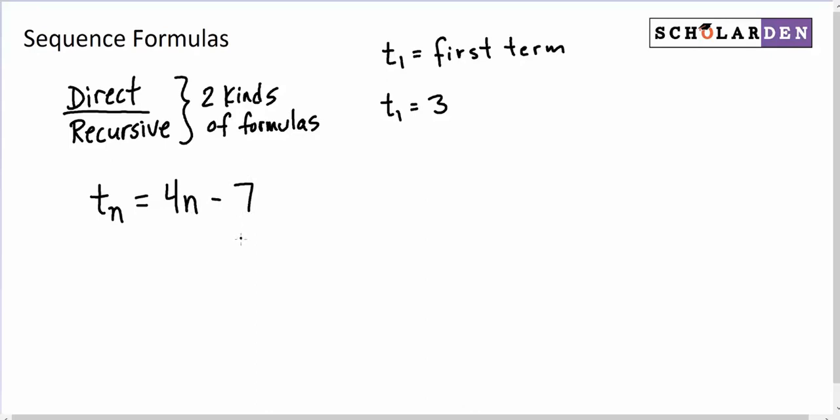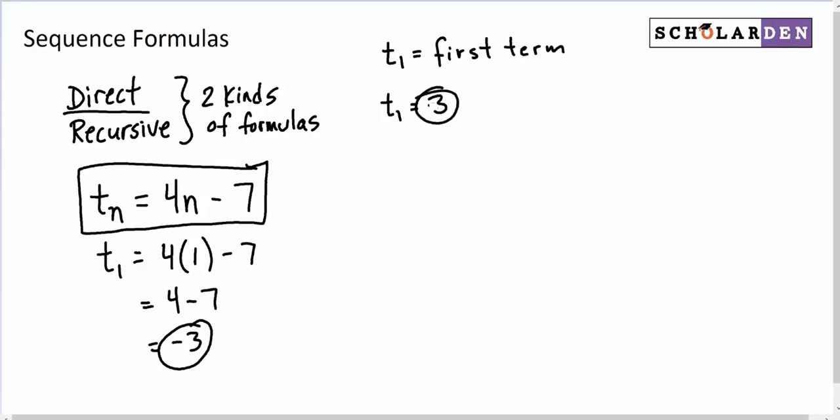So let's say I wanted to know the first term. Then that would be T₁. I would put in a 1 for N, and that would be 4 minus 7 or negative 3. So that was just a coincidence that the first term in my new sequence formula gave me the opposite of that.